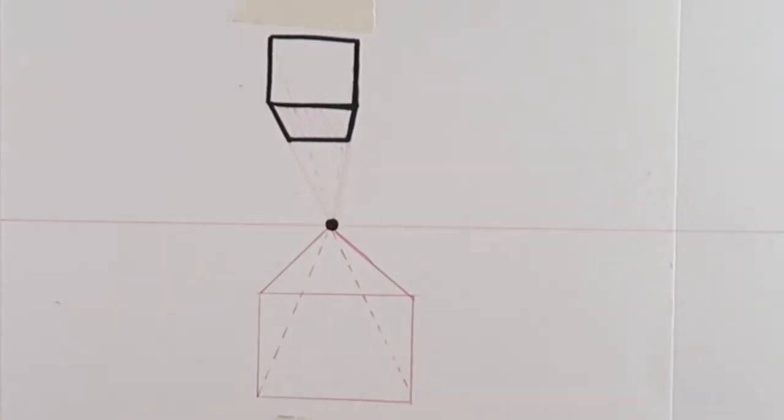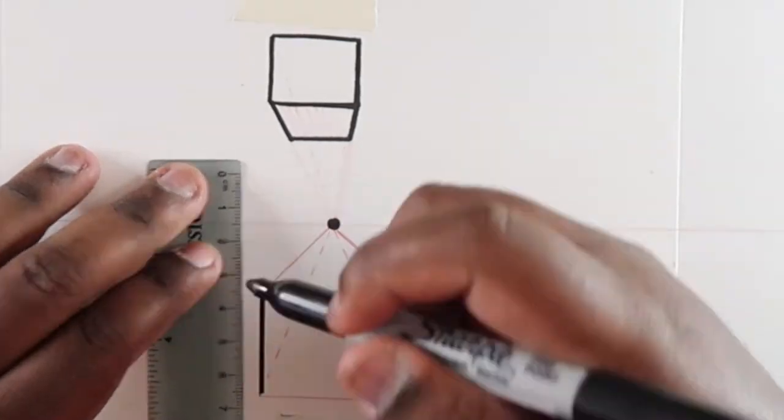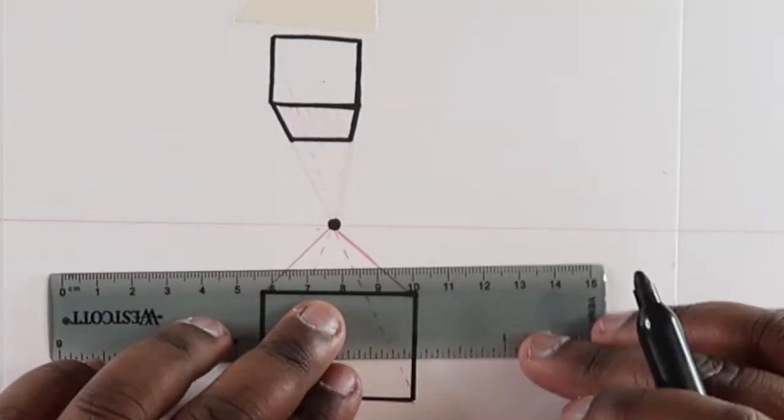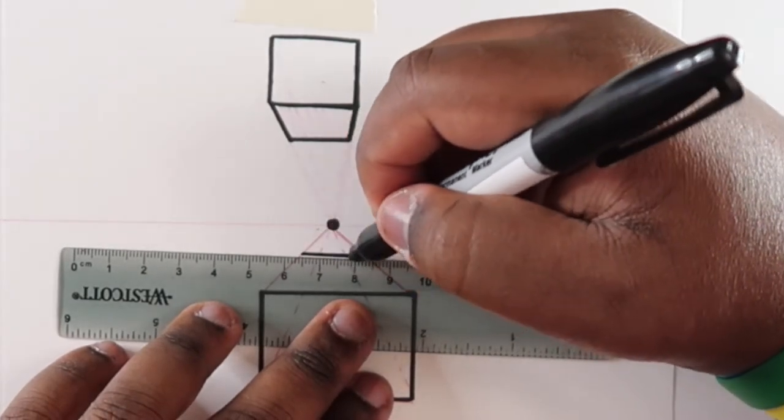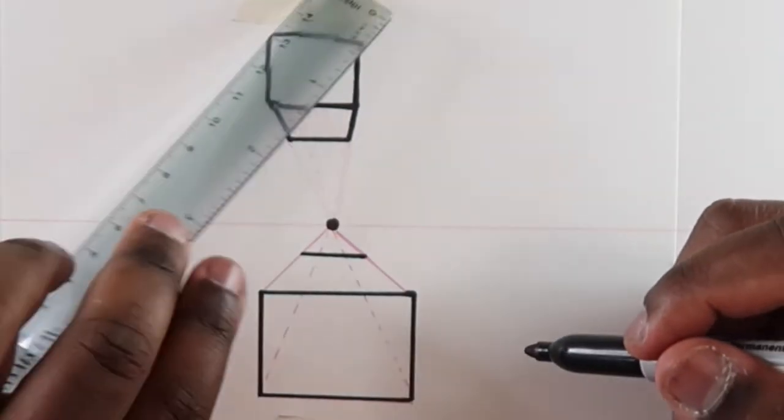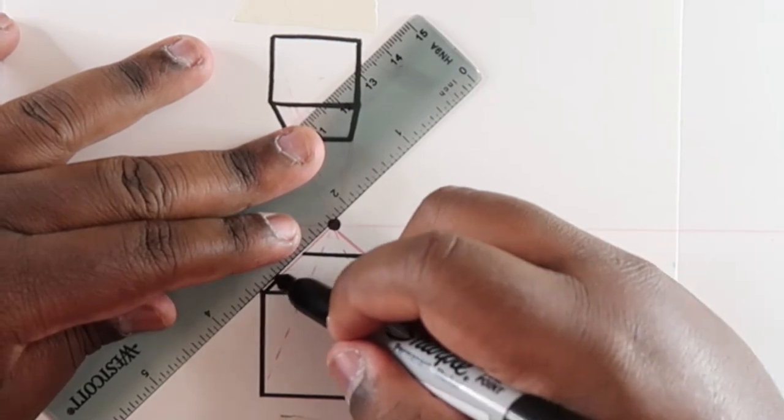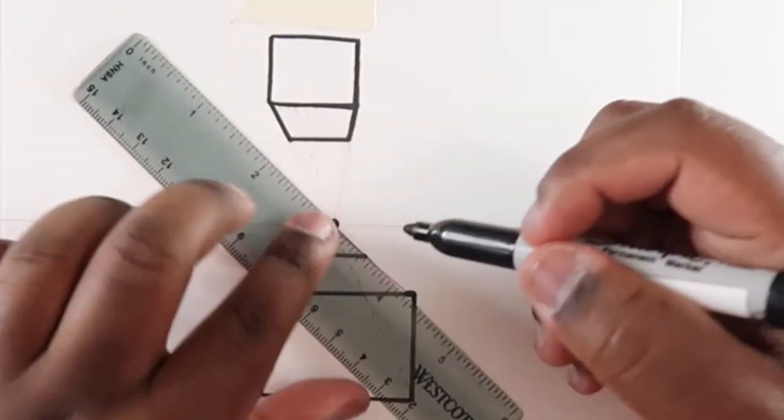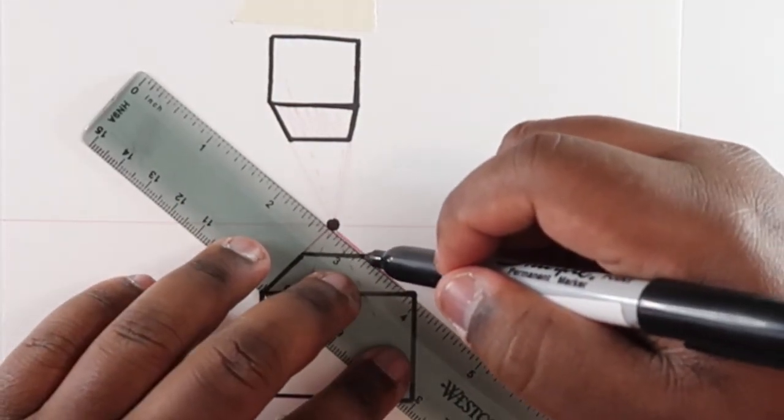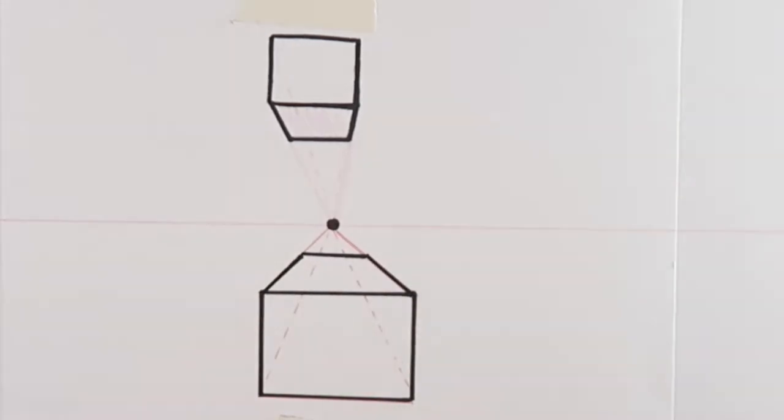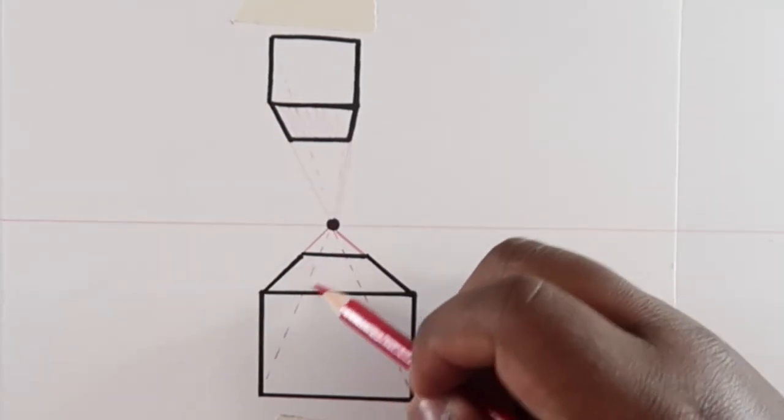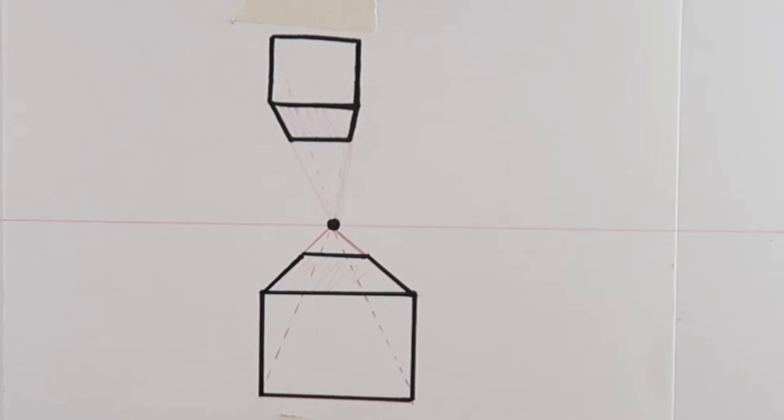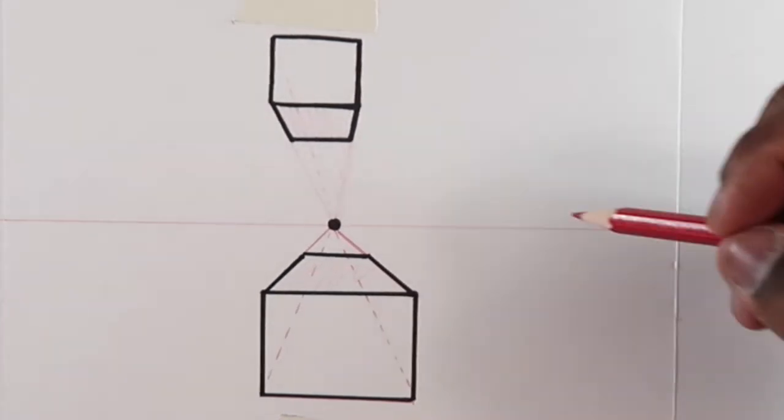And then let me grab my marker again. And then we're going to add an extra line right in the middle of these other lines here to give it dimension. So, you're pretty much looking down on it since we see the top of this cube here.